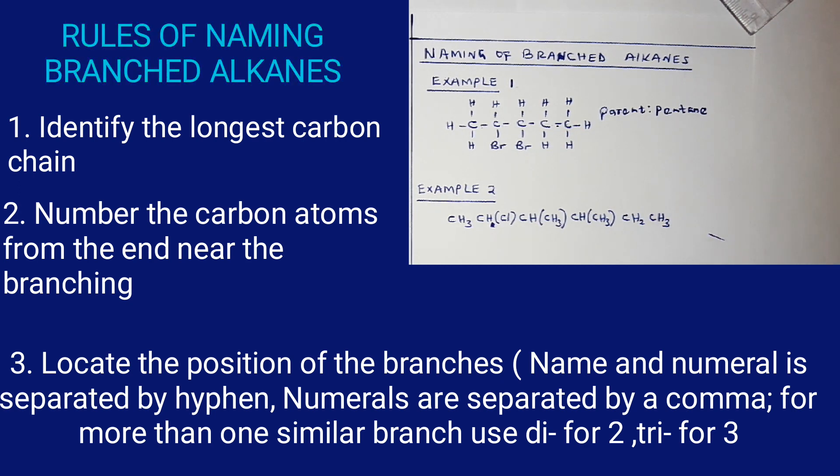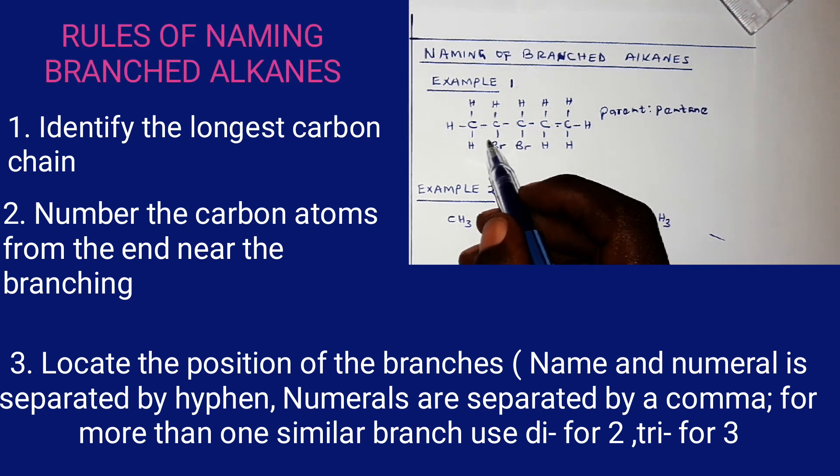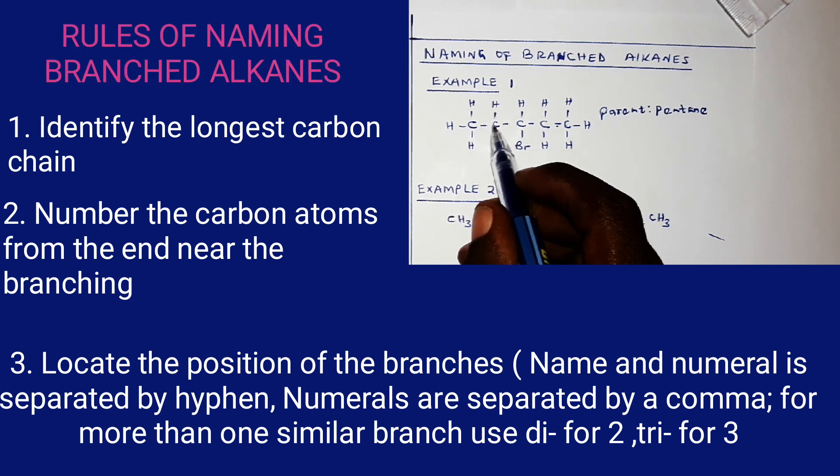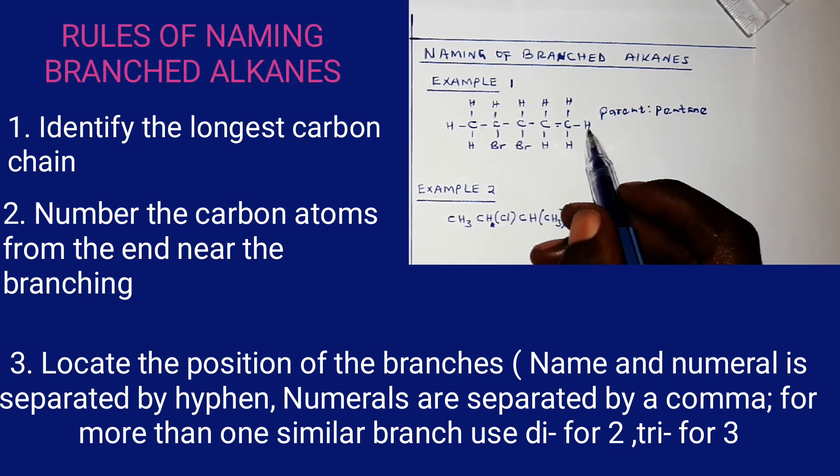Now to locate the position of branches, we have been told to number the carbon atoms from the end near the branching. So where do I begin numbering in this case? If I begin on the left hand side, the branch is at carbon number two.